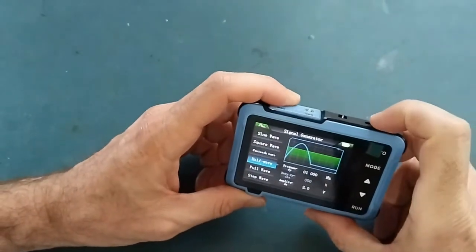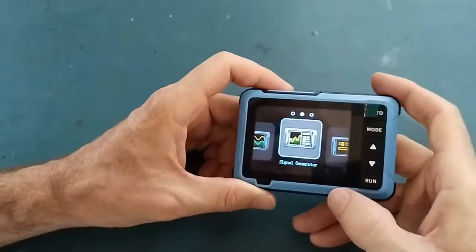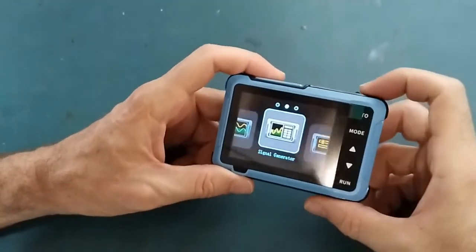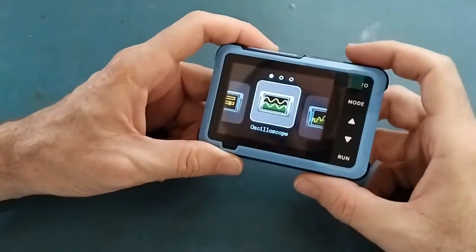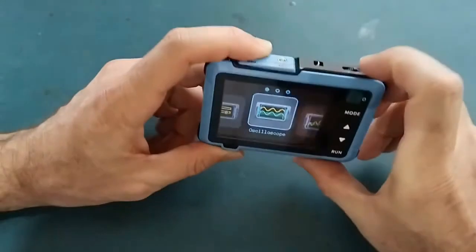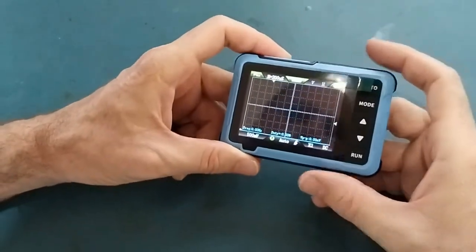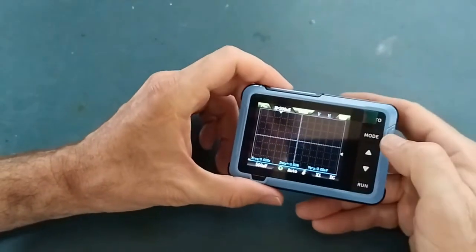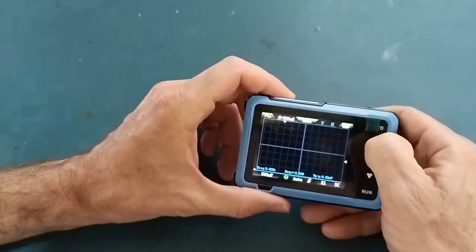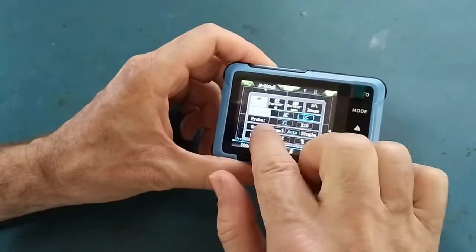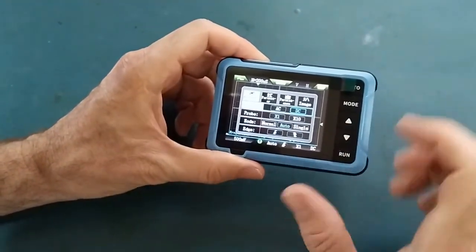If I press and hold that again, I go back to the main menu. By scrolling to the left, I can enter the oscilloscope, and currently there's no signal. By pressing and holding the mode button, I can adjust all these settings for the oscilloscope.